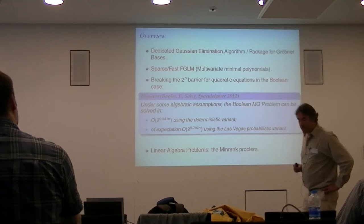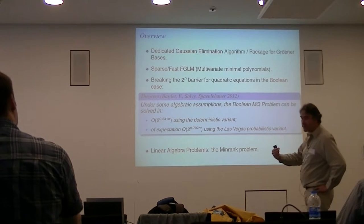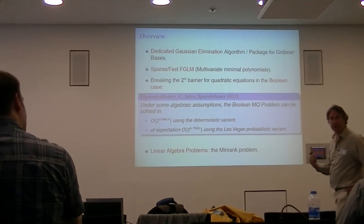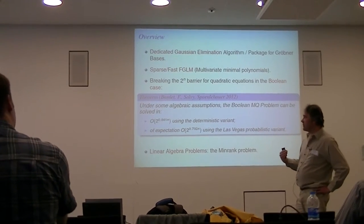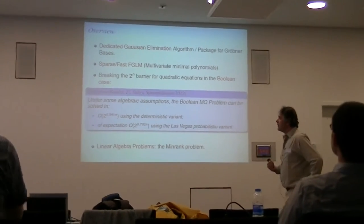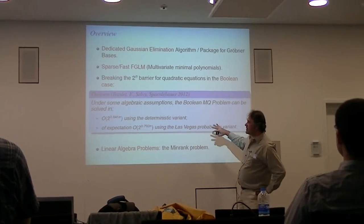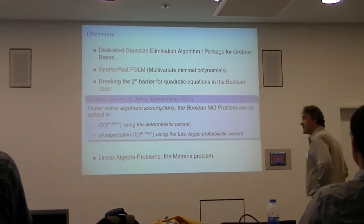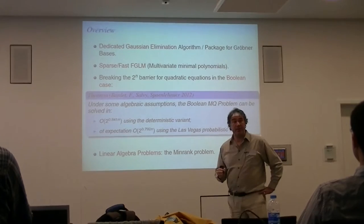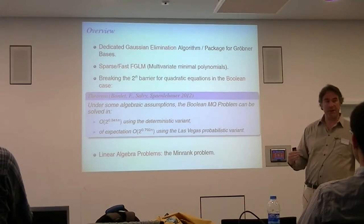Then I will speak about the second part of the computation, when you need to change the ordering, and you want to compute the linear basis but start not from the original problem but from another problem. After that, if I have the time, I will speak about a recent result to solve Boolean systems — that is, when the coefficients are over GF2 and you want the solutions over GF2.